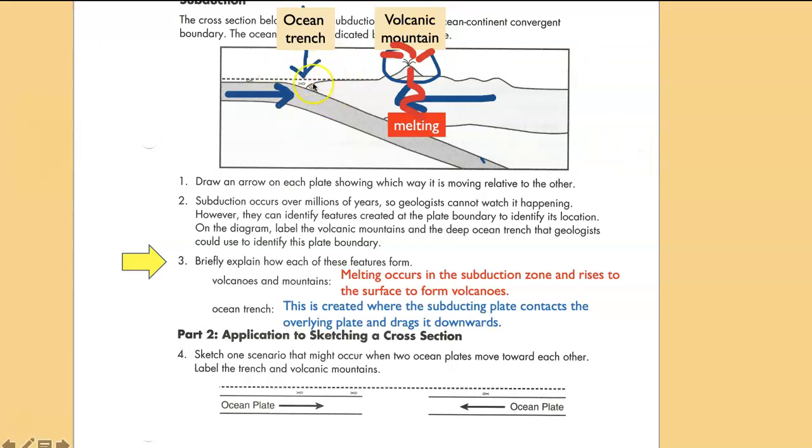The ocean trench is created where the two plates are contacting each other. And this down going plate exerts some drag on the overlying plate and it pulls it down a little bit. And that's why you get this downward trench.